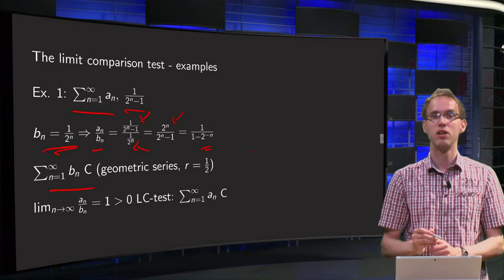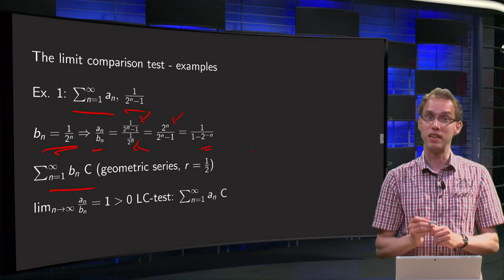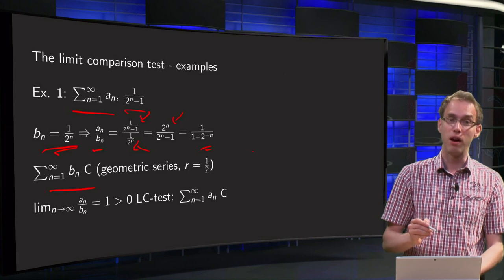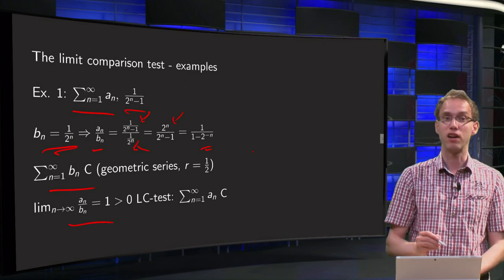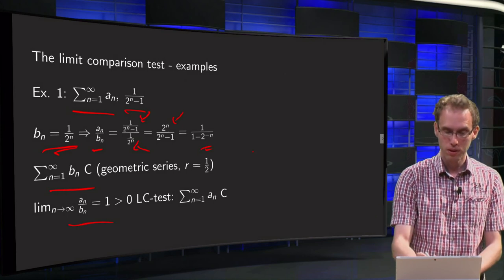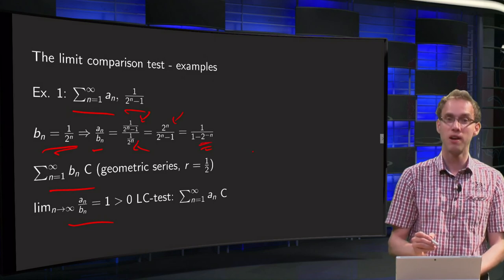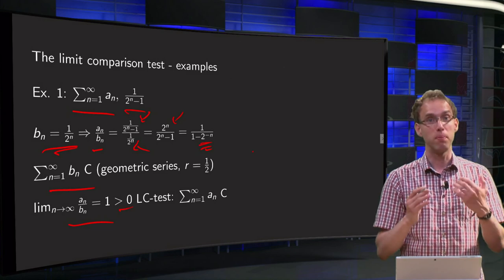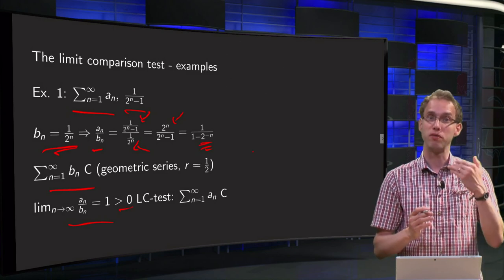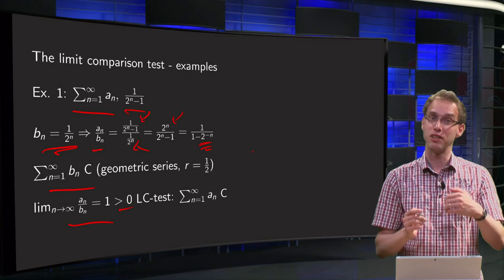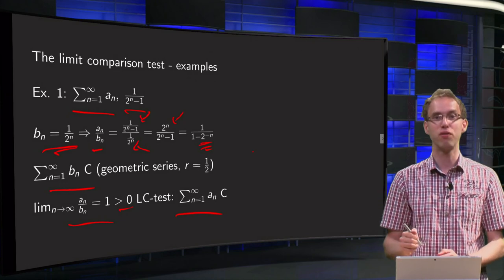Anyway, the sum n from 1 to infinity of the bn is convergent. The limit n to infinity an over bn equals 1, because then this 2 to the power minus n will cancel out, which is bigger than 0. So we can apply the limit comparison test, the sum of the bn is convergent and the sum of the an is convergent.